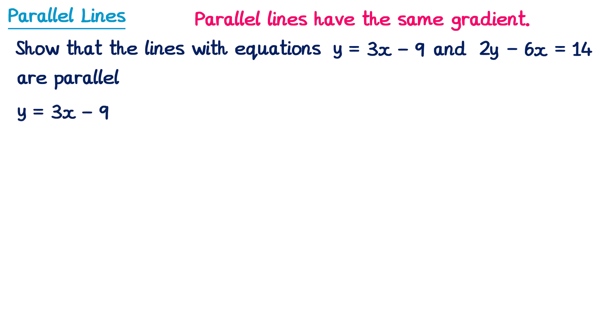Let's start with the first line, y equals 3x minus 9. This is in the correct form y equals mx plus c, so the gradient is easy to spot — it's this number here, which is 3.